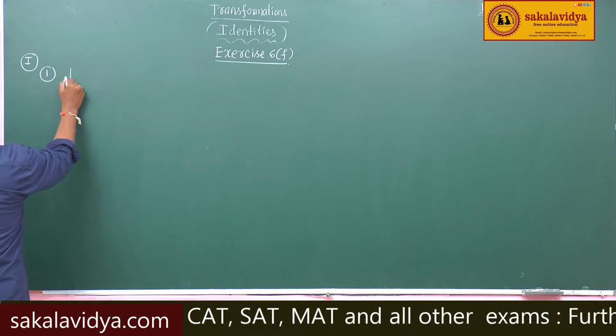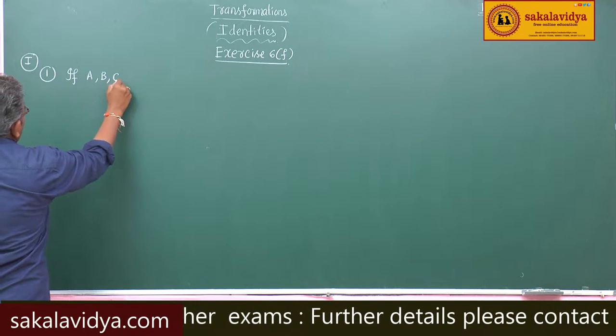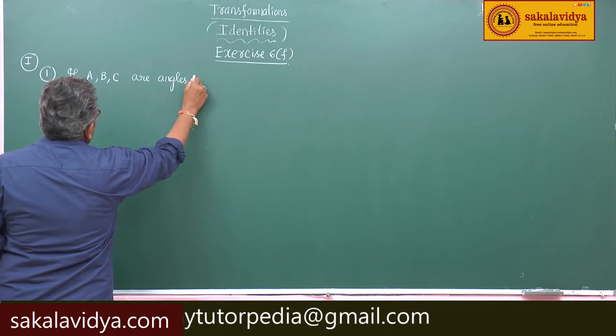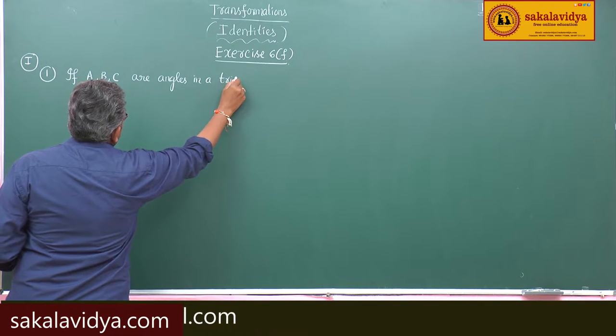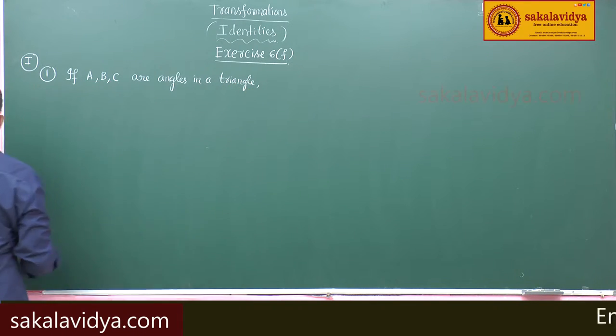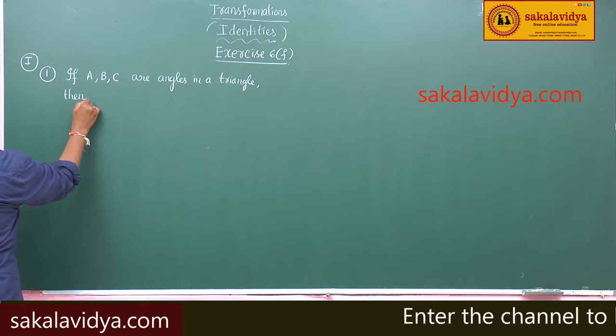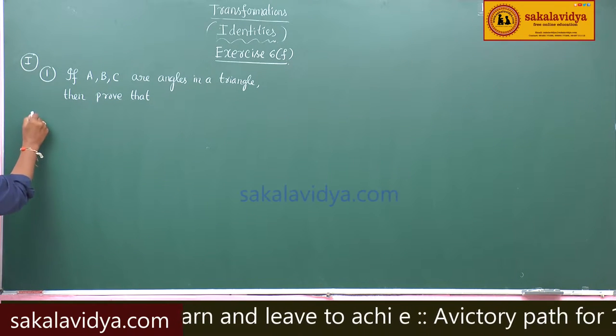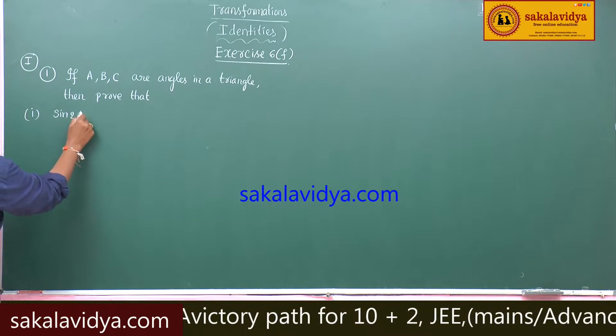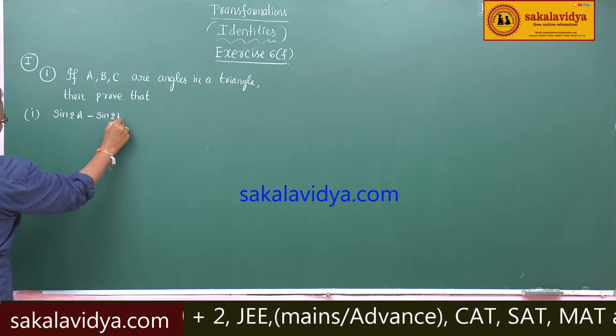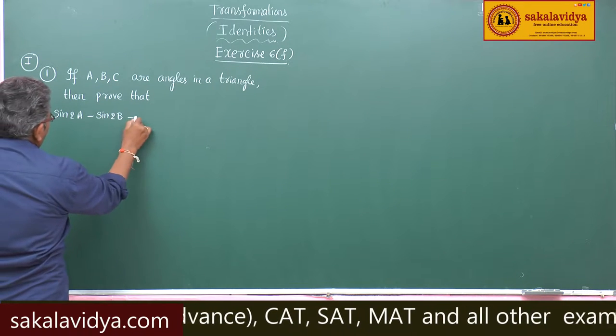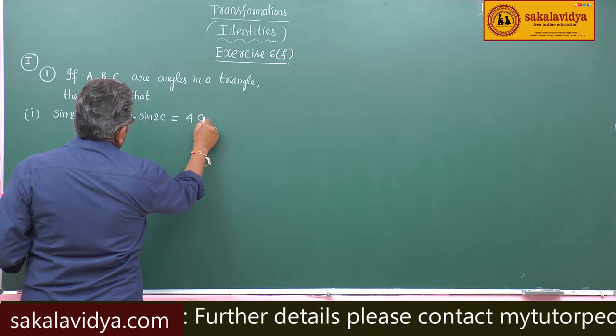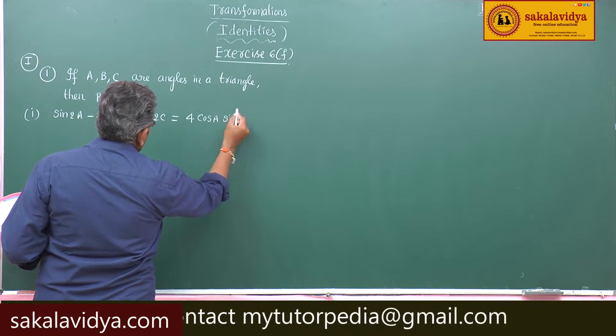If A, B, C are angles in a triangle, then prove that first one: sin 2A minus sin 2B plus sin 2C is equal to 4 cos A sin B cos C.